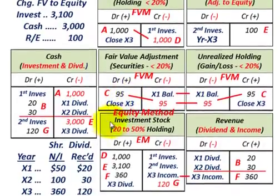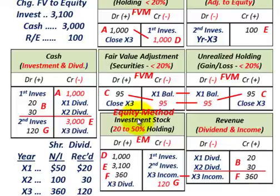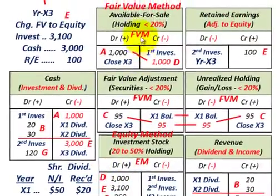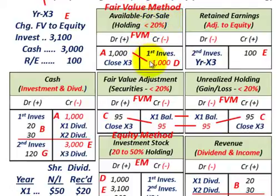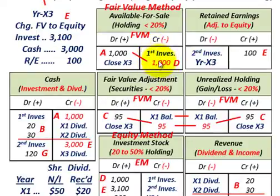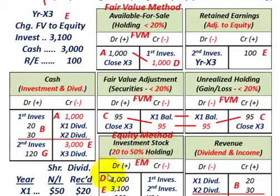For entry D, we transfer the first investment out of available-for-sale securities. We credit available-for-sale securities for the $1 million, closing out that account. The debit goes to the investment stock account — we increase our investment stock account by $1 million under the equity method.